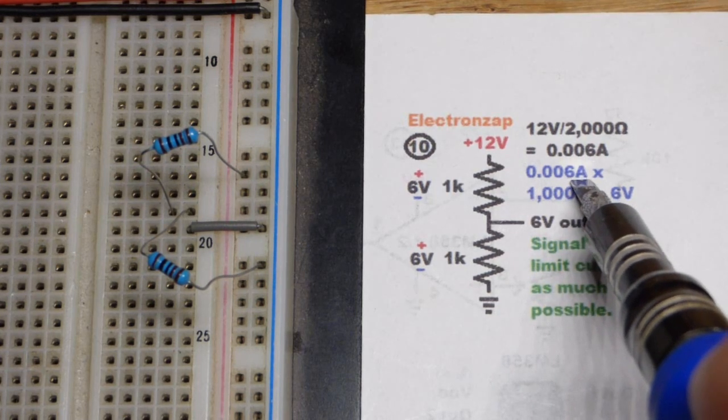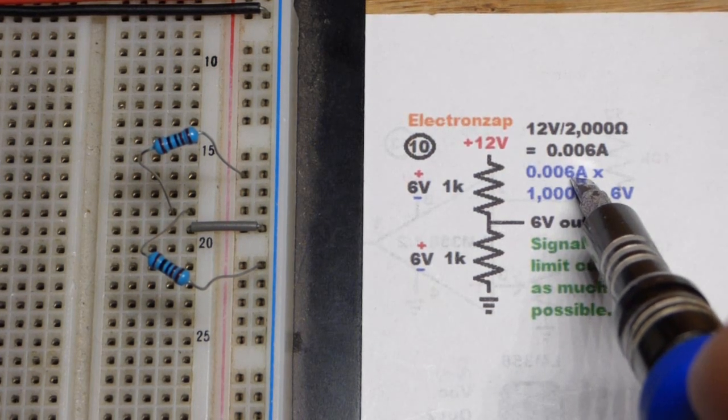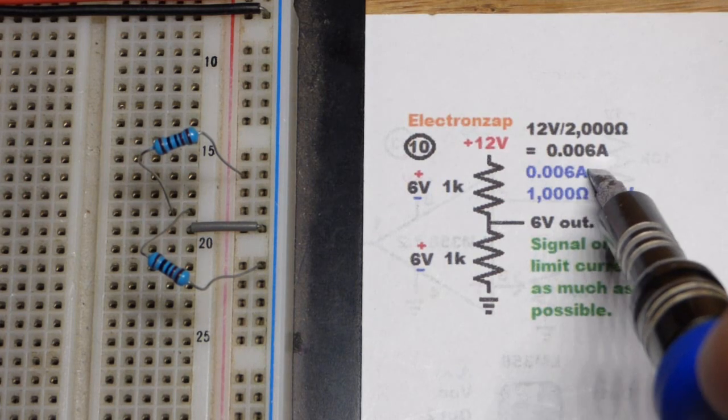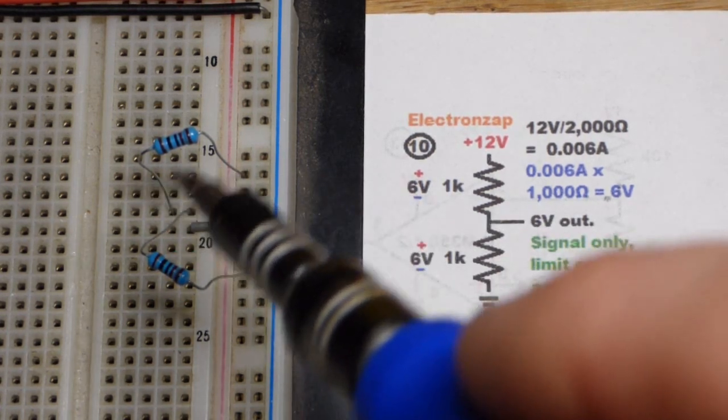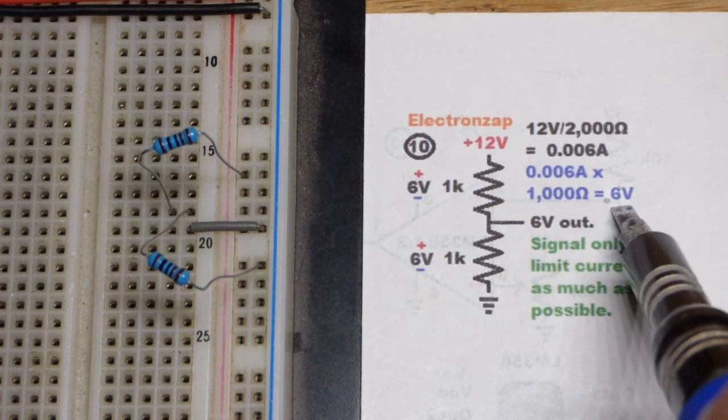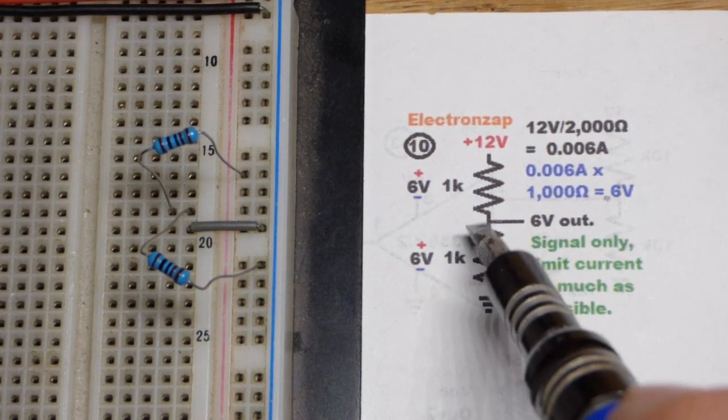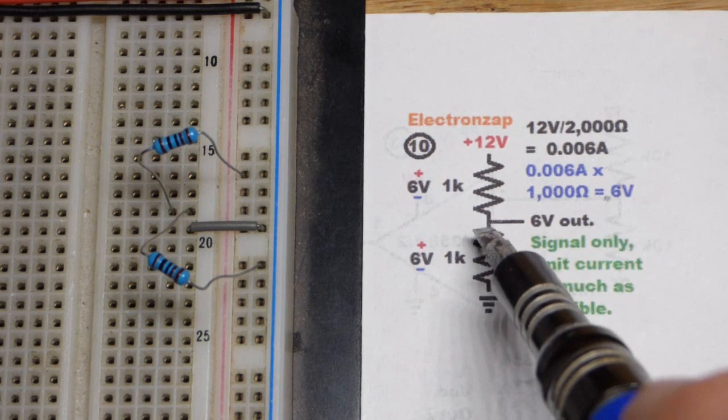I always do the math in amps when you're doing Ohm's Law. And then you times that by 1,000 ohms will tell you the voltage across the resistor. It'll be 6 volts, and we'll look at that later. So 6 volts across each resistor.